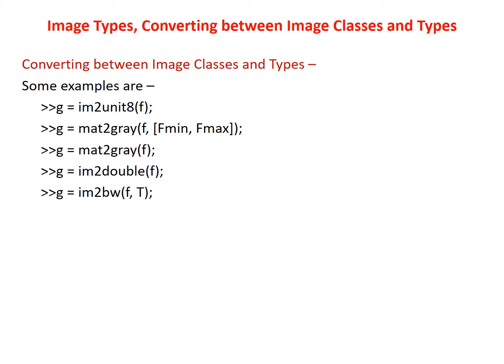In the first example, the function im2uint8 detects the data values of the input and performs all necessary scaling. To ensure the data is valid image data, im2uint8 sets to 0 all input values less than 0, sets to 255 all values greater than 1, and multiplies all other values by 255, rounding the result to the nearest integer.